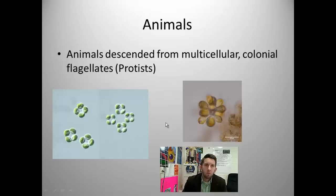As far as animals go, where do we come from? We descended from multicellular colonial flagellates, which were protists. Protists, as you know, they are at the root of all of the eukarya. They spawn the plants, the animals, and the fungi. So we're no different in that respect. We came from the protists, and specifically from multicellular colonial flagellates.